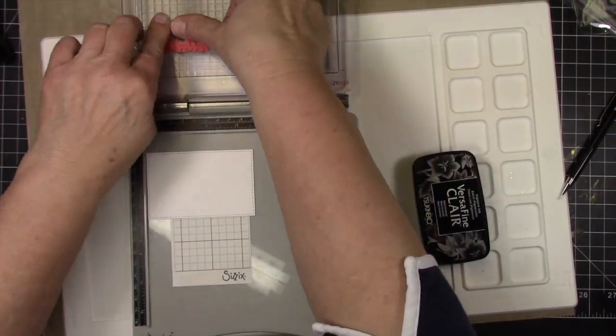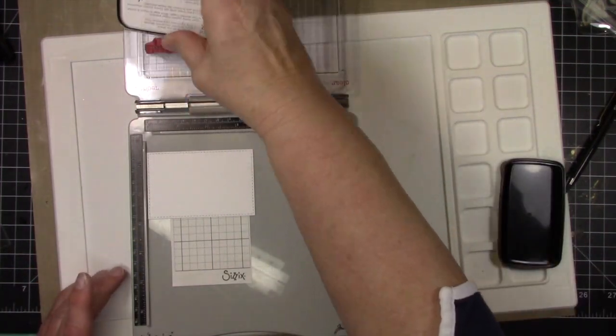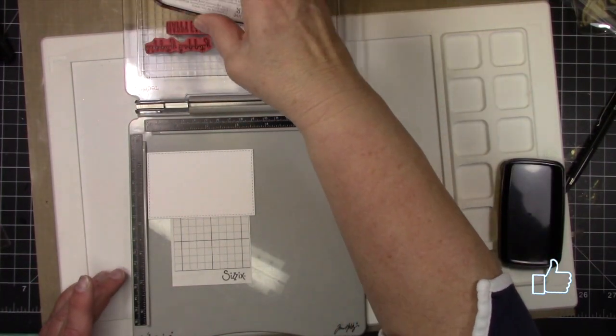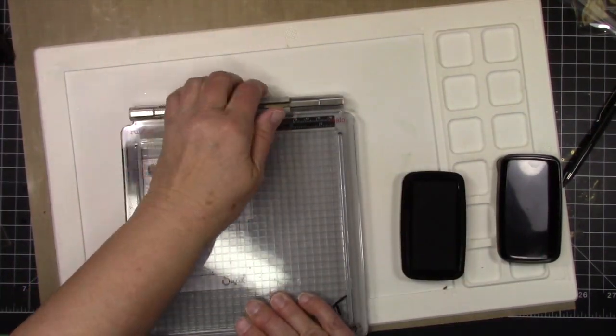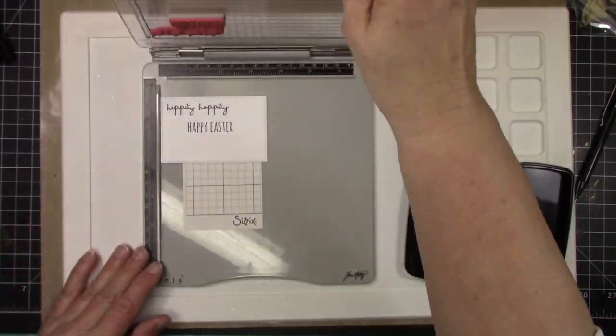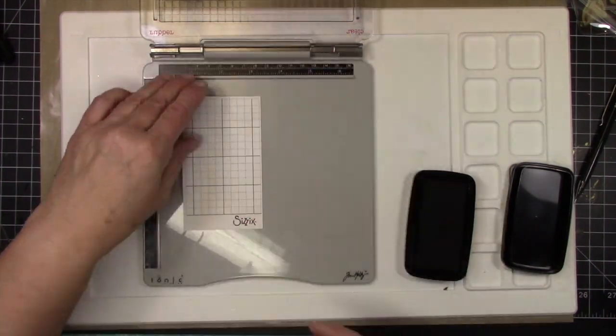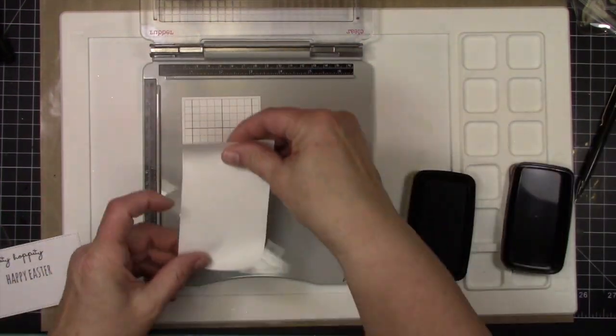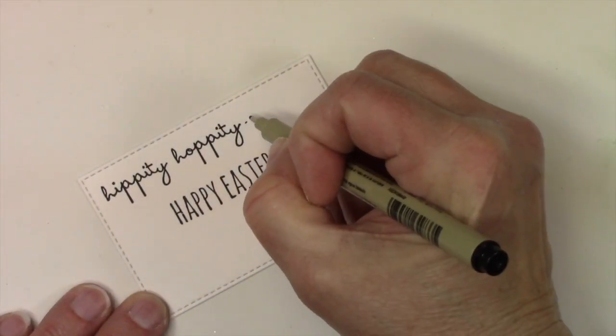I'm just going to use some VersaFine Clair black ink. It does stamp very deep black and it's good for sentiments. You don't want to squish this too much or you'll get your letters all squished, but just as Tim says, stamp with purpose and put your cover back on your little stick it for your Sizzix. I love that. It's so you don't have to use magnets.